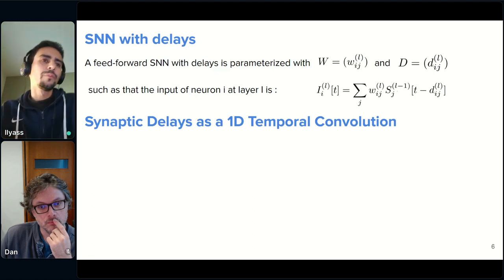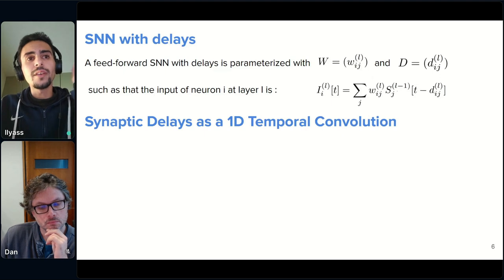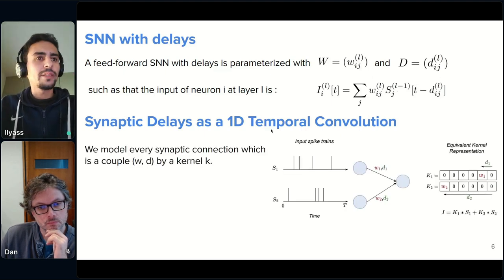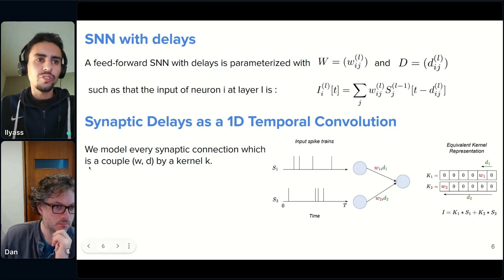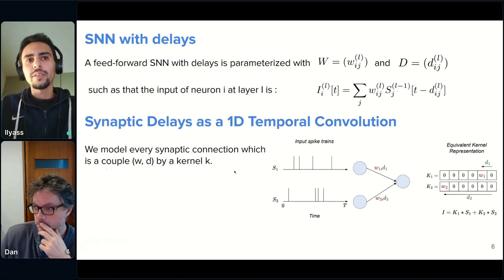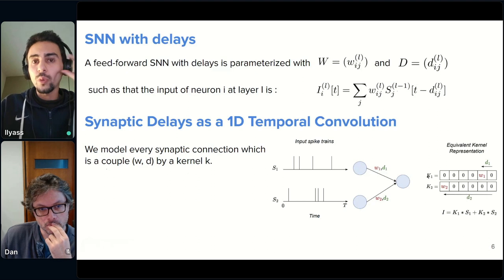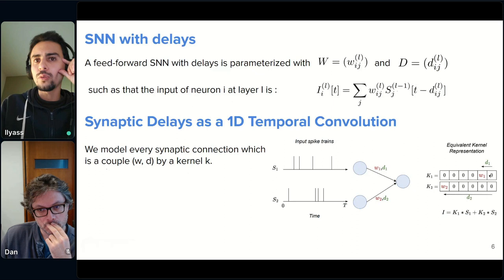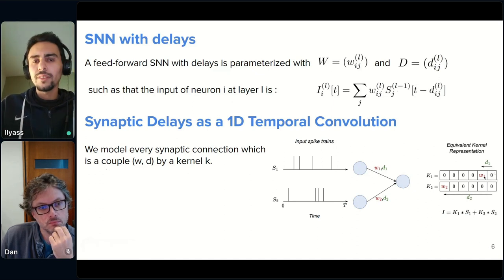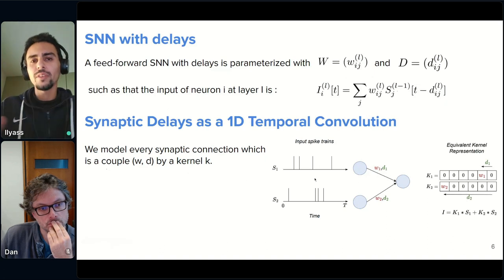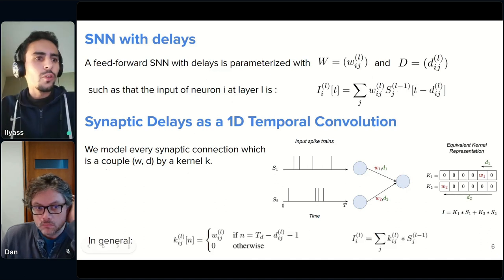And for us, the way that we use delays in our work is that we incorporated them as one-dimensional temporal convolution. What I mean by this is that we model every synaptic connection in the network, which is just a couple weights delay, by a kernel K, a one-dimensional temporal kernel. So, if we look at this figure here, we can take this synaptic connection, which has W1 and D1. It will be equivalent to a one-dimensional temporal kernel that has the value of the weight W1 in here with an offset of the delay. And then all we do is take this temporal kernel and convolve it with the spike train.